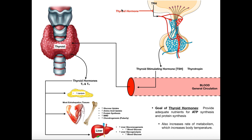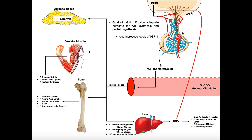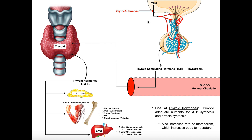The final thing thyroid hormones do is exert negative feedback on TRH at the hypothalamic level, similar to how IGFs did this with growth hormone releasing hormone. If there is a lot of thyroid hormone in the blood, it tells the hypothalamus we've already got enough, so it inhibits the release of TRH. This drops the amount of TSH released, which in turn drops the amount of thyroid hormones synthesized and released by the thyroid gland.